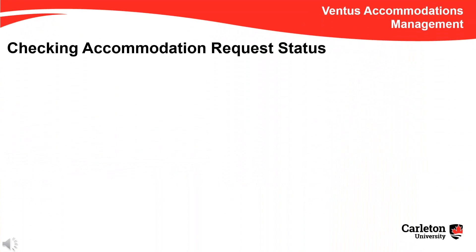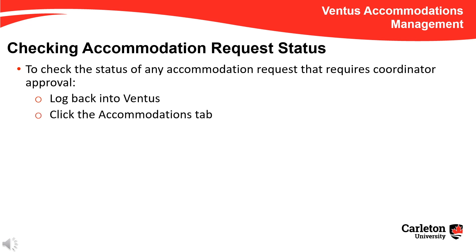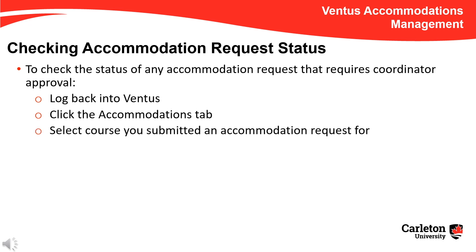You can check the status of any accommodation request that requires Coordinator approval by logging back into Ventus. Click on the Accommodations tab, select any course for which you submitted an accommodation request, and check the status column to see if all have been approved. If the status is listed as Approved, your PMC Coordinator has processed the request and will coordinate the resources required for your accommodations.